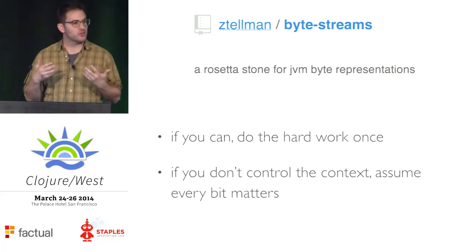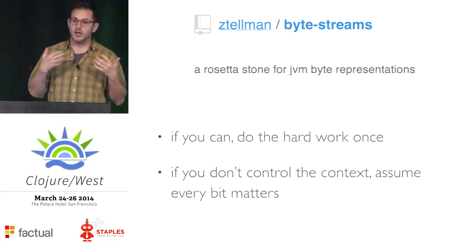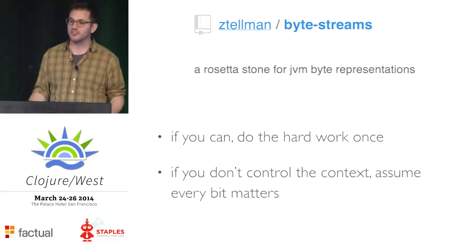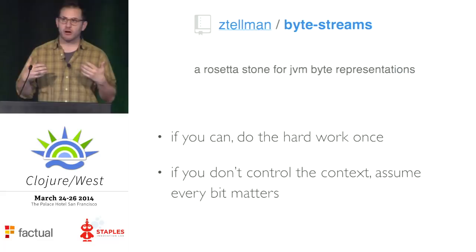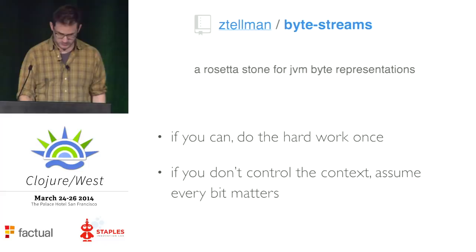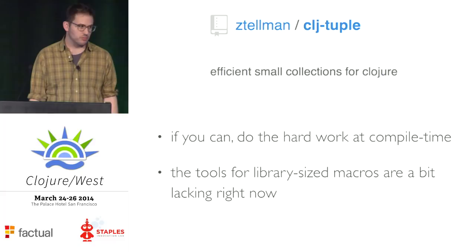Looking back at byte-streams, the lesson is: front-load the work. Memoize it. Do the hard part once. This has two benefits: it's less expensive across all subsequent runs, and we don't have to be particularly performance-minded when writing that run-once code — we can write it expressively without concern for overhead because that cost is amortized. This means we can split our code into the bits that are hard to reason about, performance-wise, and the bits that are generally more expressive. Writing performance-oriented code everywhere is a pain. And from CLJ-tuple the lesson is that we don't even necessarily have to do it at runtime — in some cases we can do it at compile time.